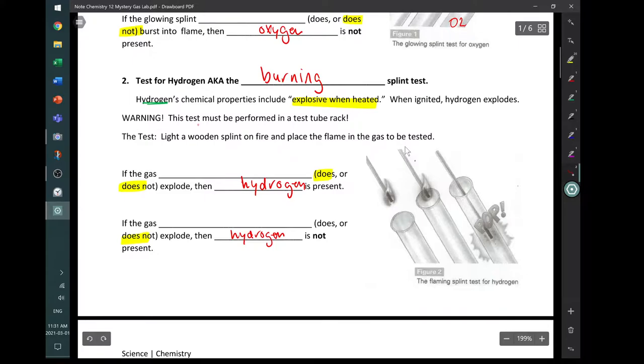And certainly a warning here, the test must be performed in a test tube rack because the explosion can be a little scary sometimes. If we're not careful, we drop our test tube. And of course our test tube is going to have chemicals in it. They could be hot, they could be on fire. We don't want to drop them on our toes. So our test is to light a wooden splint on fire. We're going to place that fireball in the gas to be tested. If the gas does explode, then hydrogen is present. If the gas does not explode, then hydrogen is not present.